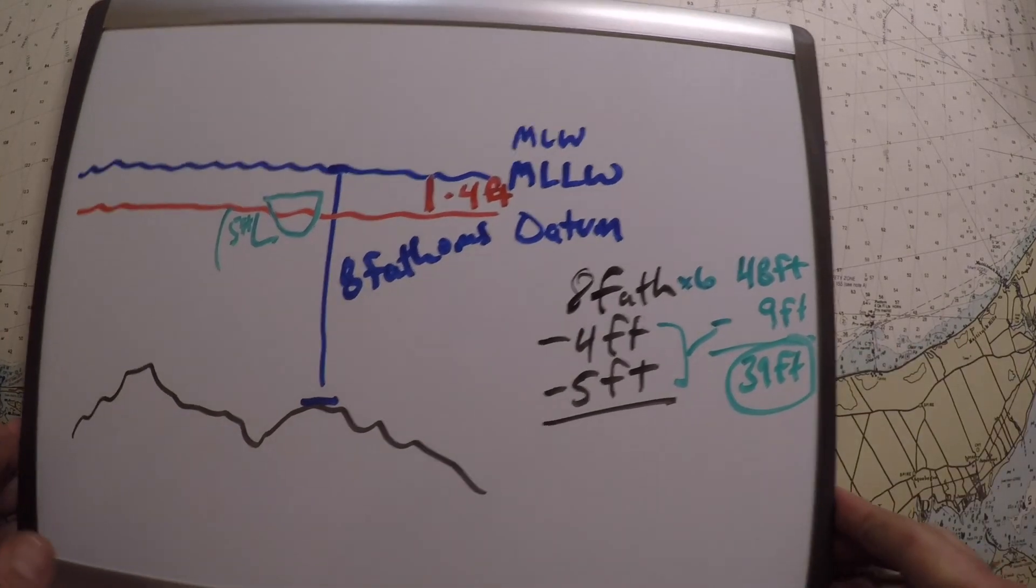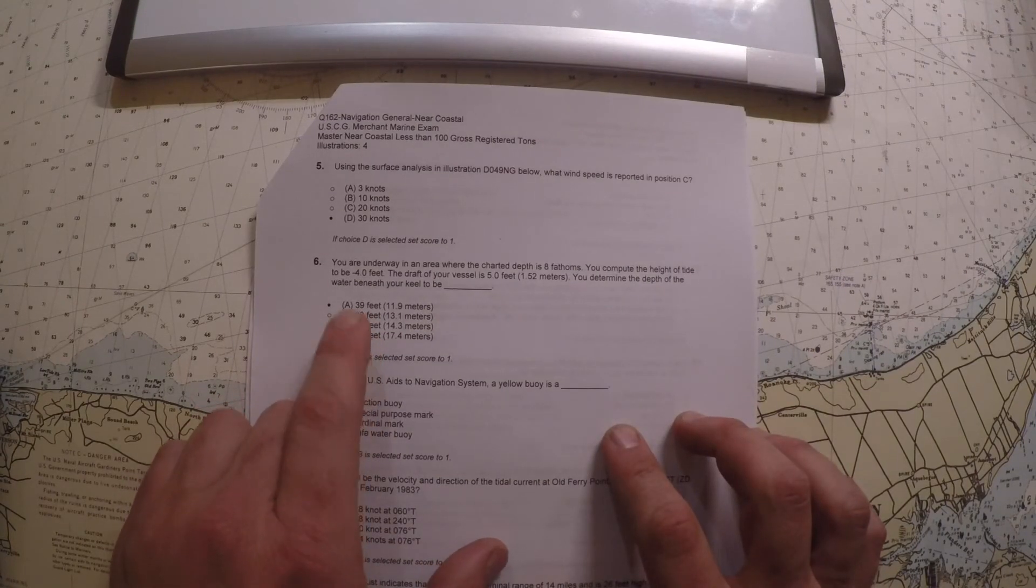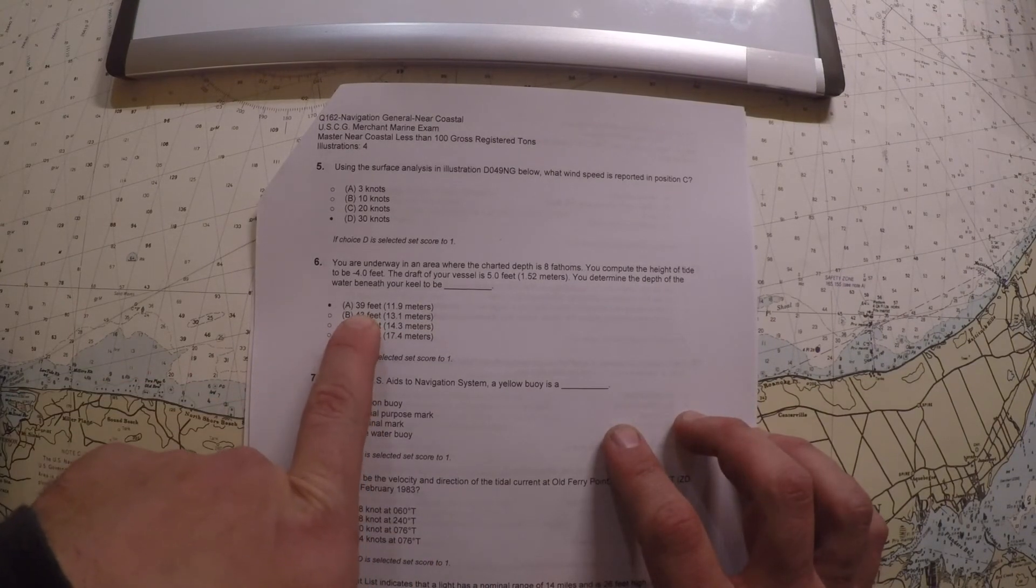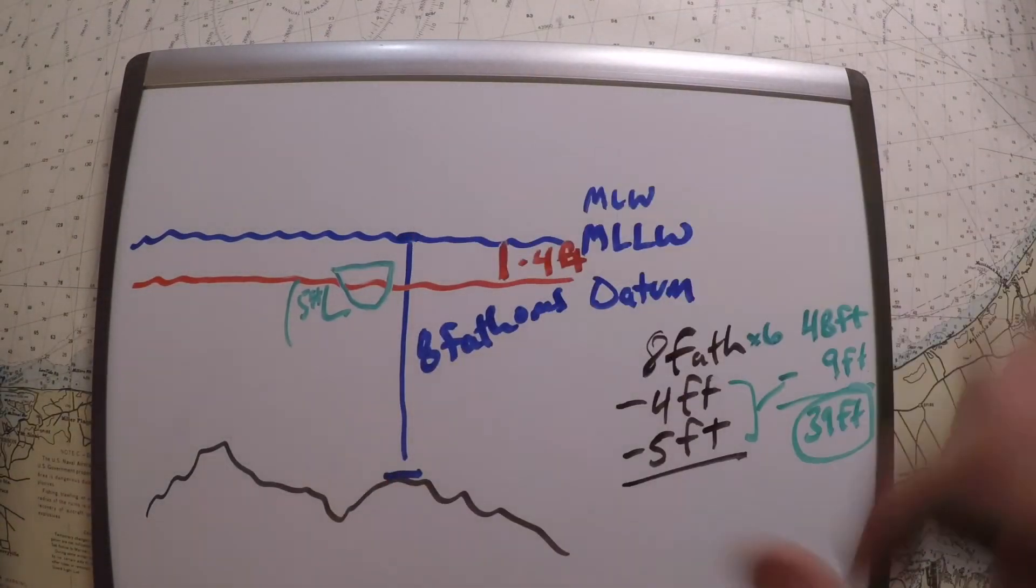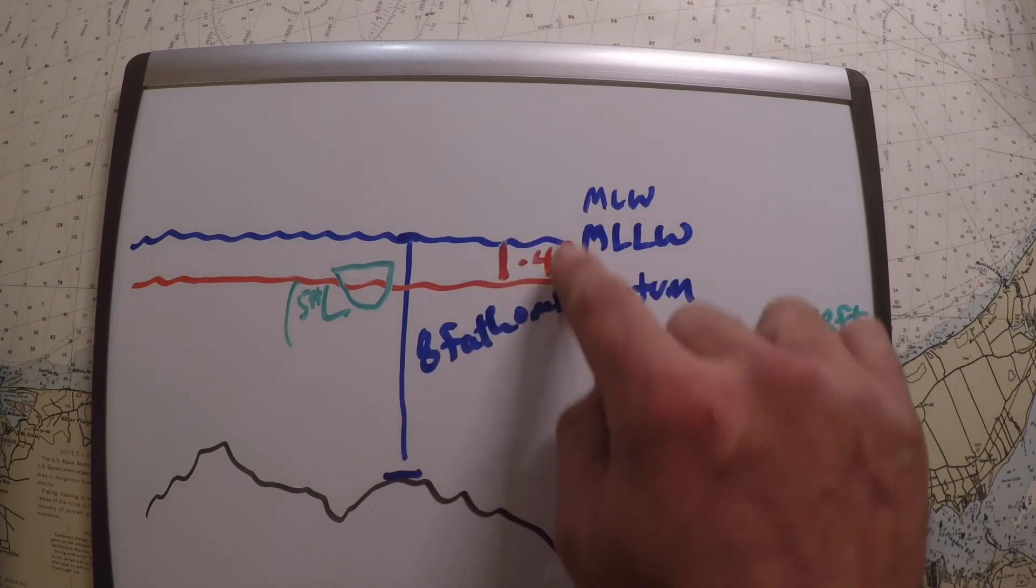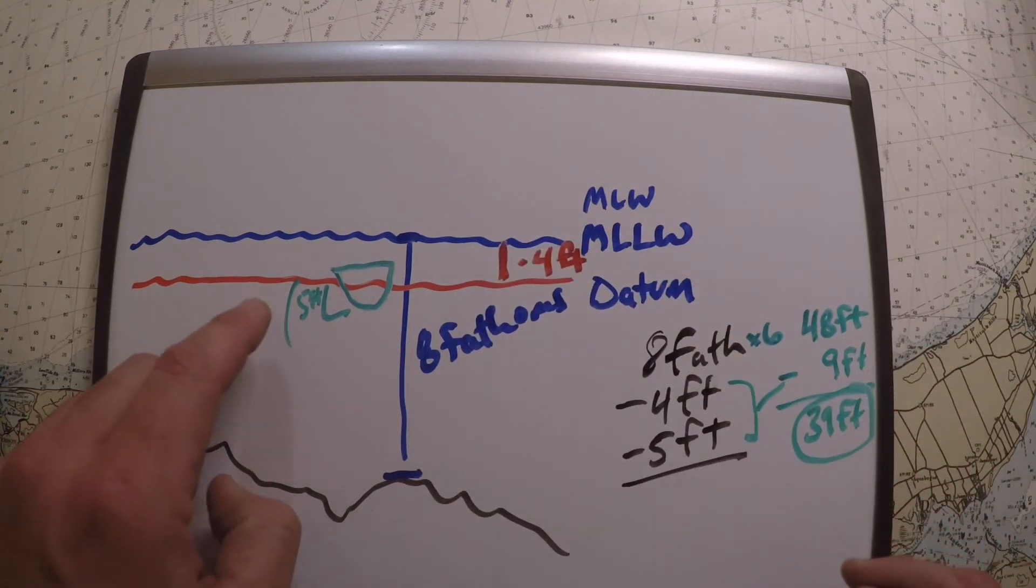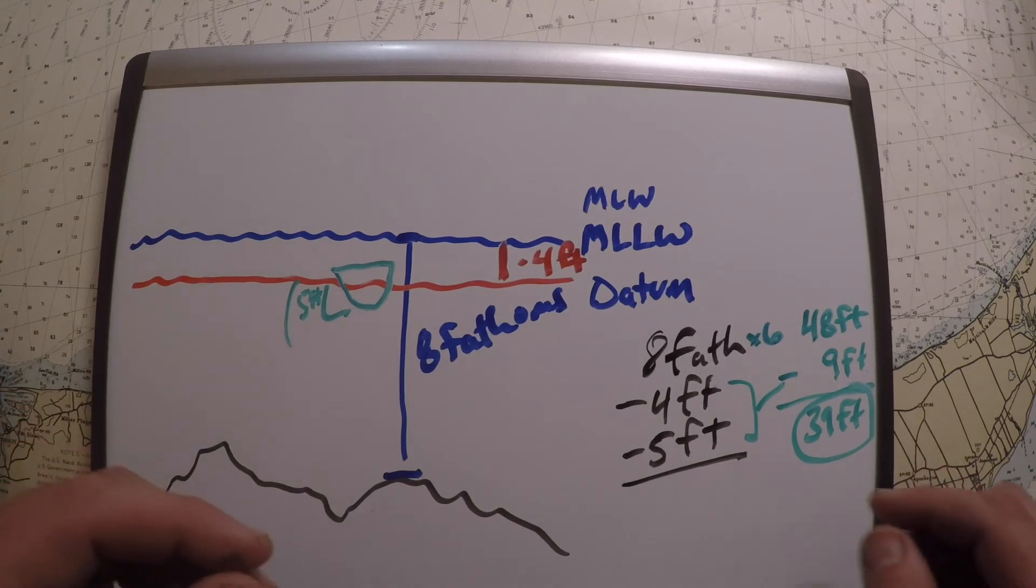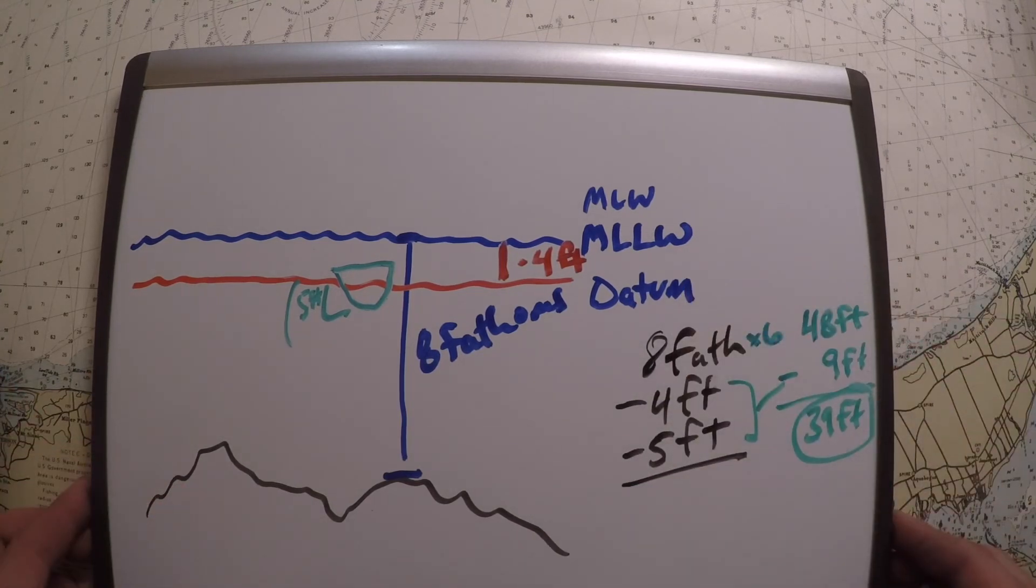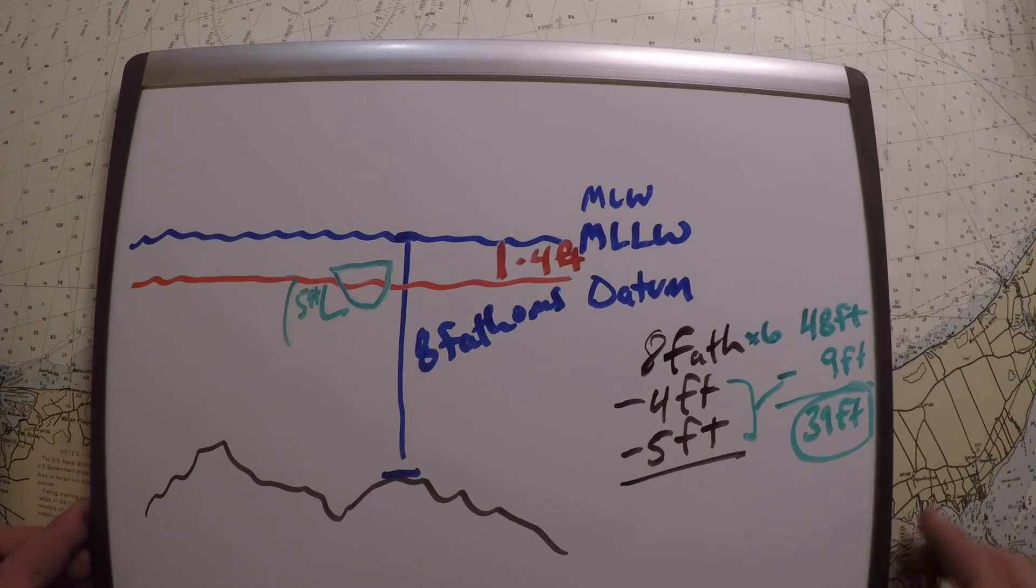And so what's 48 minus 9? Well, it's 39 feet would be our answer. And then looking at the choices, we've got 39, 43, 47, 57, so our answer is going to be 39 feet. So to solve this problem, we looked at what the charted depth is—8 fathoms—we subtracted the tide, it was a negative tide, and then we subtracted 5 feet for our keel depth and converted everything from fathoms to feet to make sure we're in the same units and came up with our answer there.